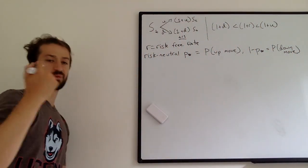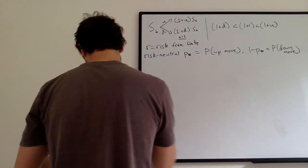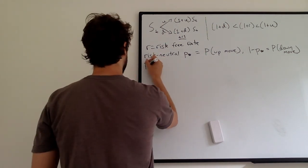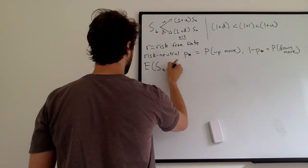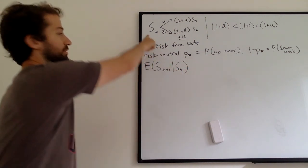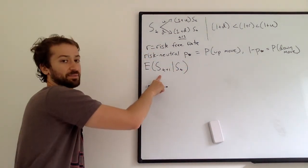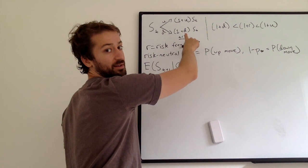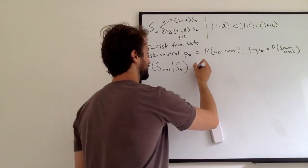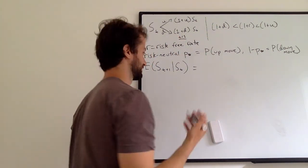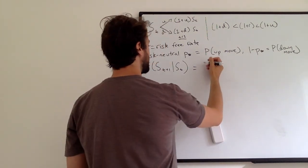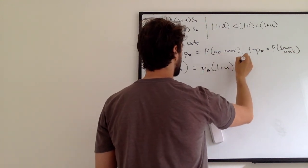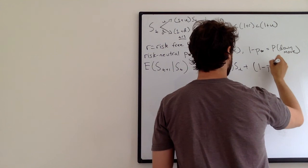So it goes up or it goes down. Up with probability P star, down with probability one minus P star. And specifically what makes P star special is that the expected value of S T plus one given S T. So given where we are at S T, the expected value of S T plus one, there's only two ways that it can go. It can go up with probability P star or it goes down with probability one minus P star. So just by a simple weighted average, law of total expectation, this is P star, one plus U.